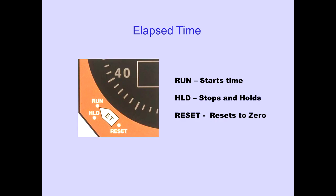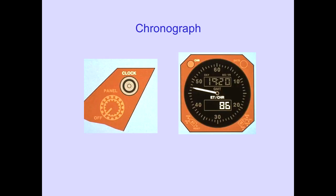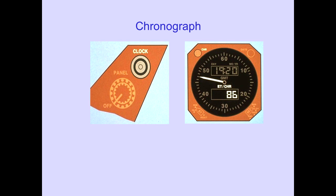Elapsed time is controlled by the elapsed time switch. The run position starts the elapsed time display, the hold position stops and holds the elapsed time, and the reset position resets the elapsed time display to zero. The chronograph switch starts, stops, and resets the chronograph. Chronograph seconds are displayed by the sweep second hand, and chronograph minutes are displayed in the ET-CHR display. The clock switch on the glareshield functions the same as the chronograph switch on the respective clock. The chronograph minutes display has priority over elapsed time display; elapsed time continues to run and will display after the chronograph is reset.